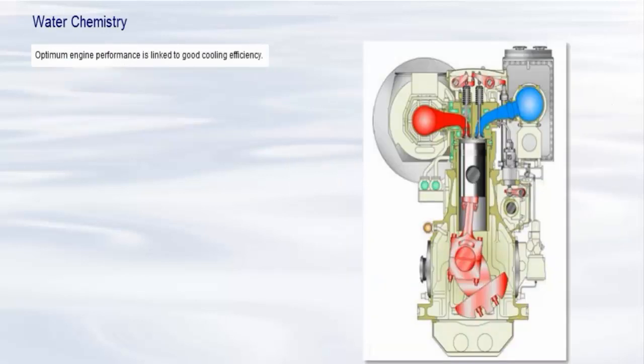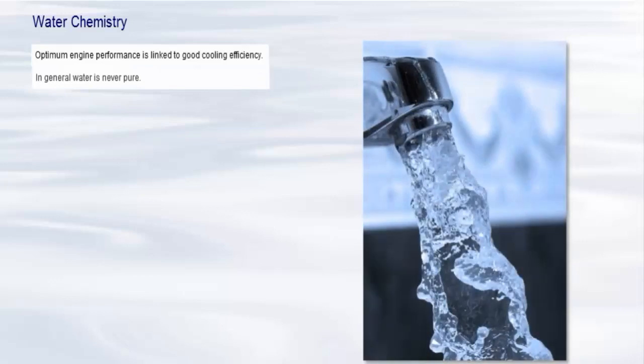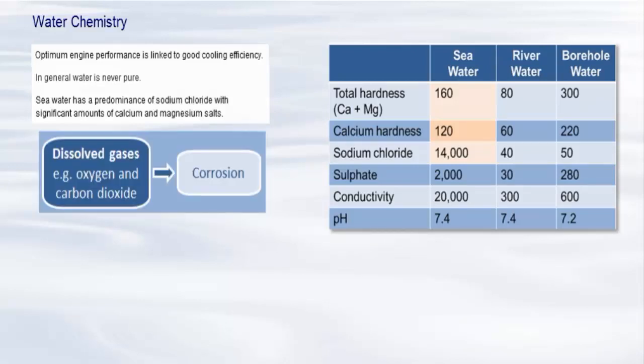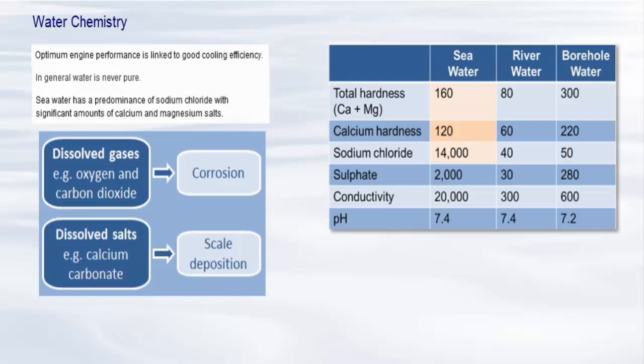Optimum engine performance is linked to good cooling efficiency. The engine cooling circuit must be kept free of corrosion damage and scale deposition. In general, water is never pure. Normal tap water contains a number of constituents that are important and beneficial to our constitution. The table shows that seawater has a predominance of sodium chloride with significant amounts of calcium and magnesium salts. These impurities will cause severe operational problems if not removed or if the system metals are not protected. For example, dissolved gases such as oxygen and carbon dioxide will cause corrosion, and dissolved salts such as calcium carbonate will lead to scale deposition.